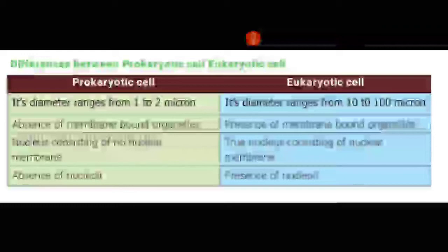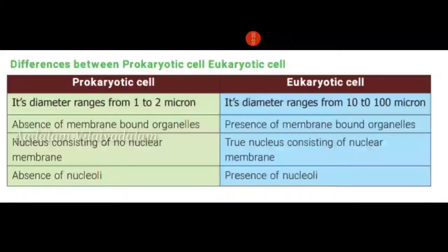Differences between prokaryotic and eukaryotic cells: Prokaryotic cells range from 1 to 2 microns in diameter; eukaryotic cells range from 10 to 100 microns. Prokaryotic cells have no membrane-bound organelles; eukaryotic cells have membrane-bound organelles. In prokaryotic cells, the nucleus is not surrounded by a nuclear membrane; in eukaryotic cells, the nucleus is surrounded by a nuclear membrane. Finally, prokaryotic cells lack a true nucleus (nucleoid only) while eukaryotic cells have a true nucleus.